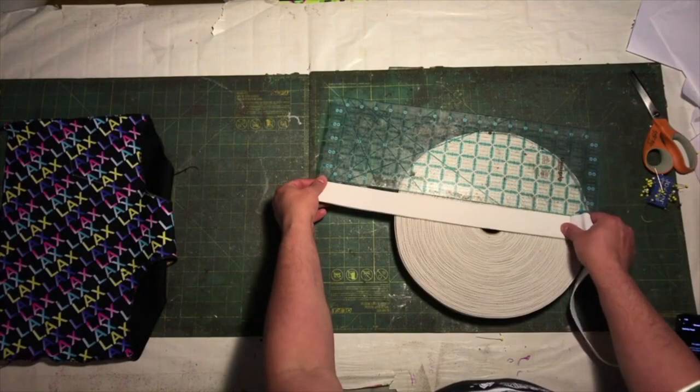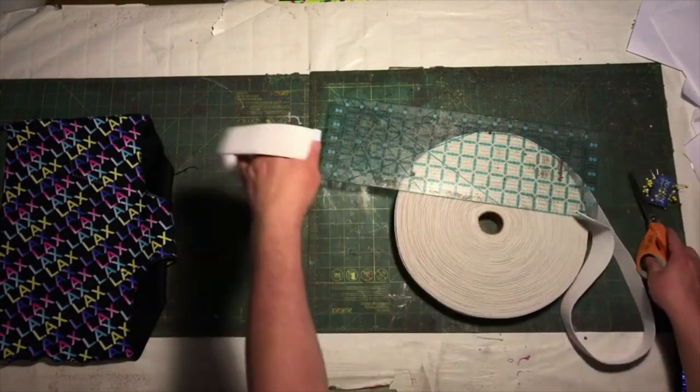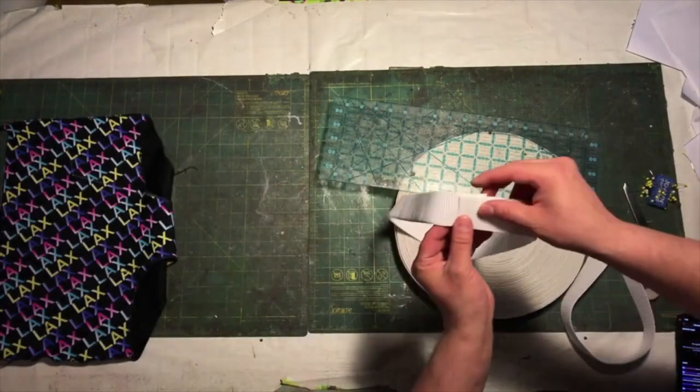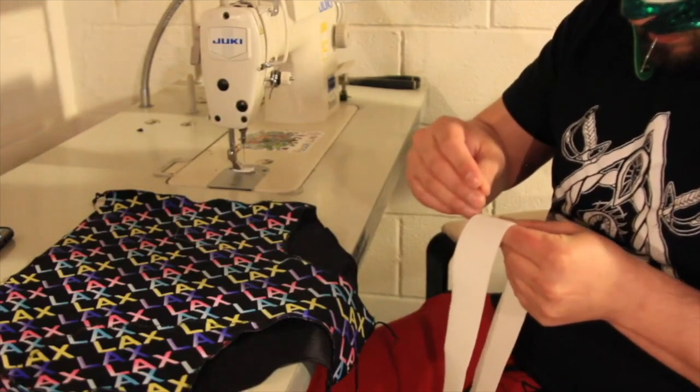For the waistband, we first cut a piece of elastic that's two inches shorter in length than the waist measurement of the client. To form it into a loop, we overlap the ends of the elastic and pin them together, then sew a square where the elastic overlaps.